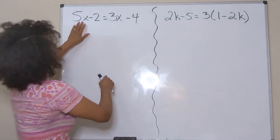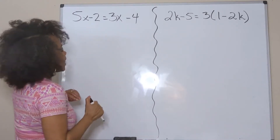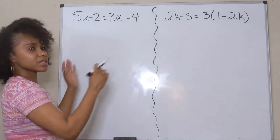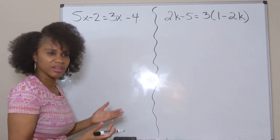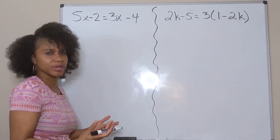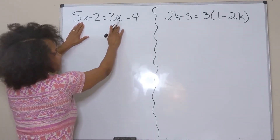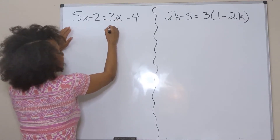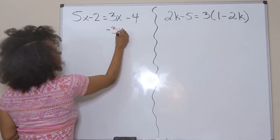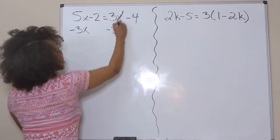In the first problem, the like terms are 5x and 3x, and negative 2 and negative 4. I like to combine the variable terms first and move them to the left-hand side — it's easier to look at and easier to solve because it looks more like a basic two-step equation. Since this is a positive 3x, my inverse is to subtract 3x from both sides, which cancels it out on the left.